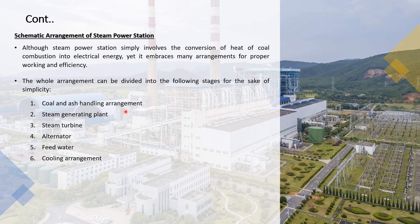The stages are: coal and ash handling arrangement, steam generating plant, steam turbine, alternator, feed water system, and cooling arrangement. Coal storage and ash handling are also part of the arrangement, converting mechanical energy to electrical energy.